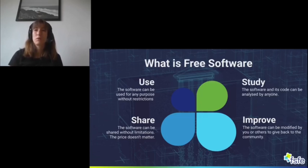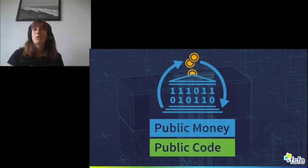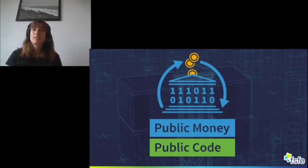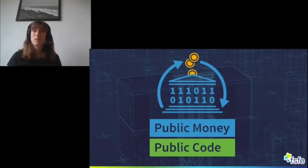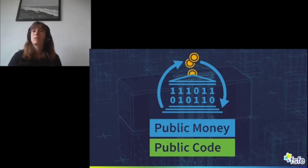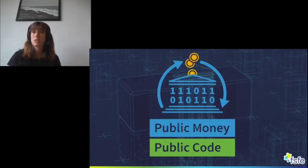So what has this to do with Public Money Public Code? Well, the Public Money Public Code campaign wants legislation requiring that publicly financed software developed for the public sector should be made publicly available under a free and open source software license. So software paid for by taxpayers' money and developed for the public sector should be made available under a free and open source software license, thereby granting the four freedoms.